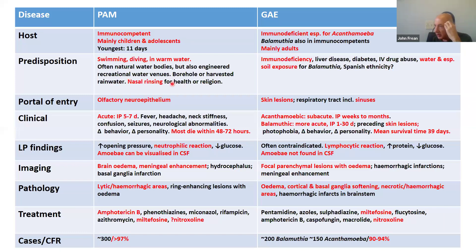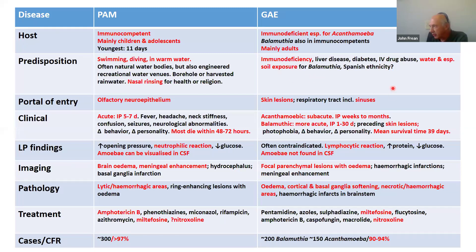Nasal rinsing for health or religious purposes using contaminated water is also a route. The predisposition on the GAE side involves various forms of immunodeficiency, and soil exposure in the Americas for Balamuthia — where Spanish ethnicity appears to be a genetic risk factor. For PAM, entry is via olfactory neuroepithelium; for GAE, it's via skin and respiratory tract.